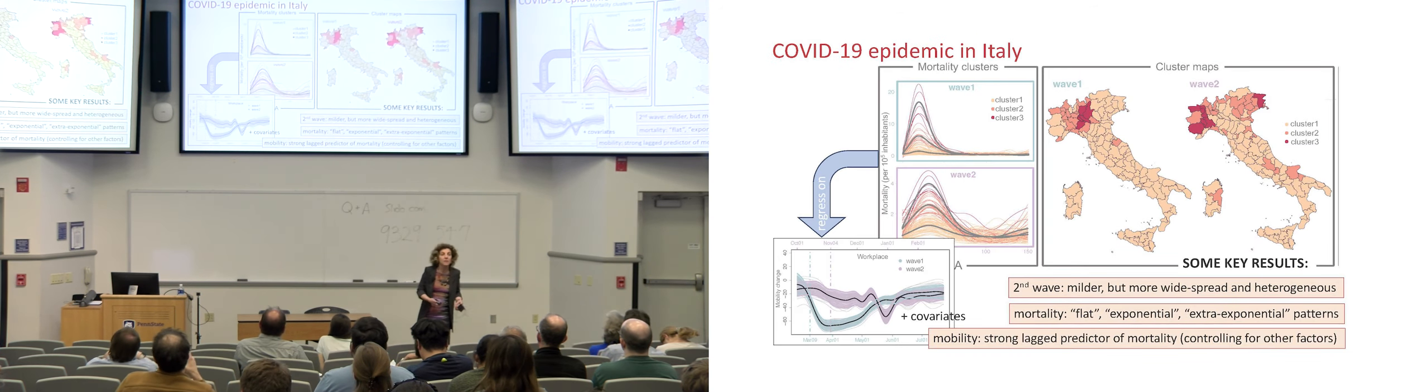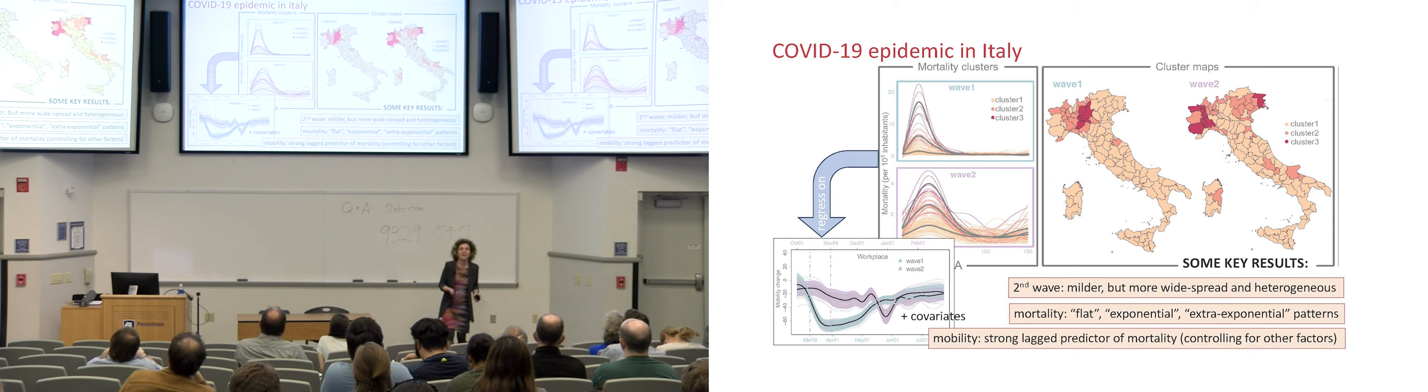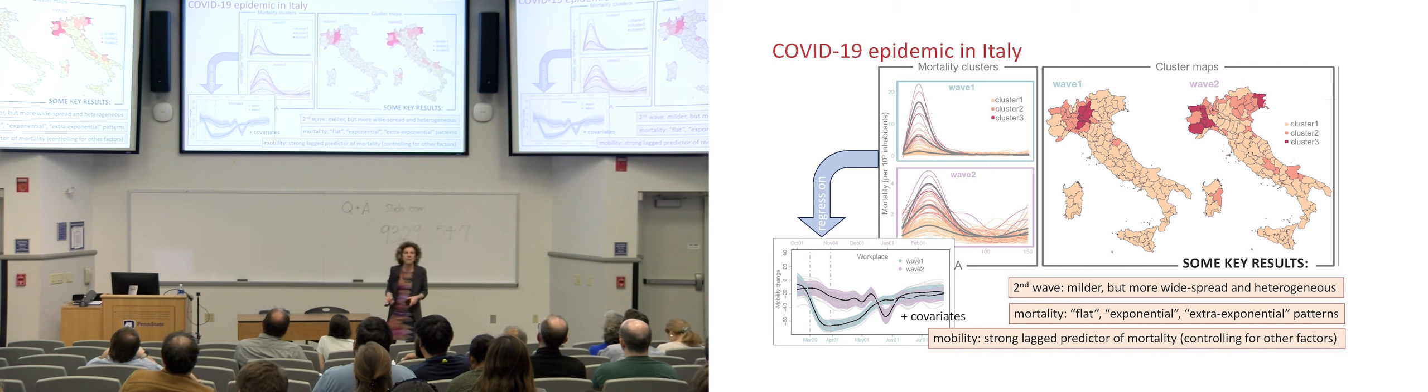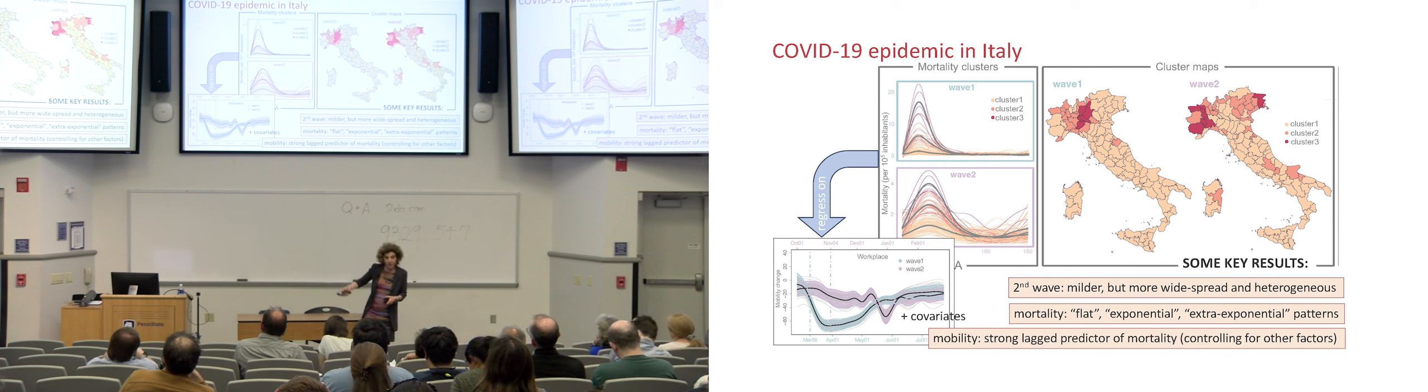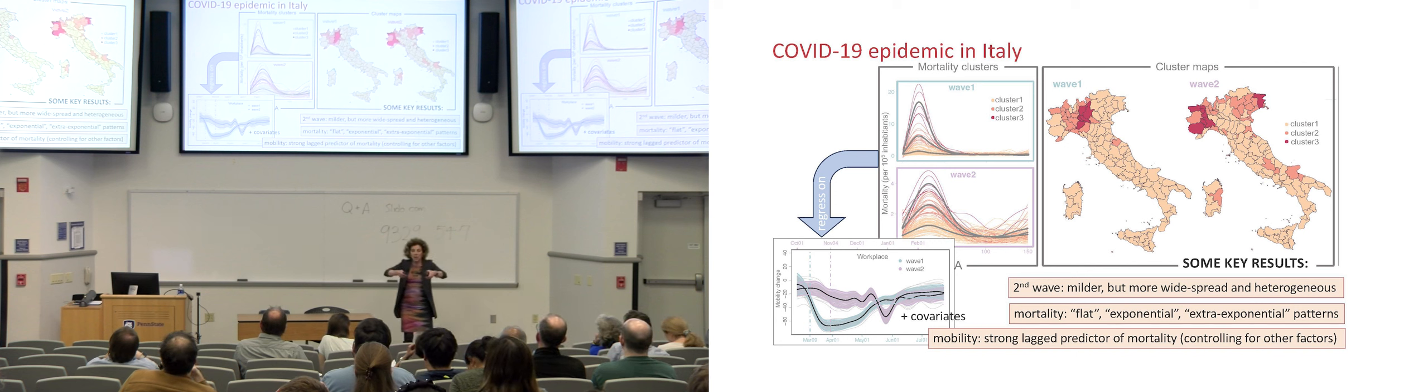So, notwithstanding all of this, in the end, functional data saved the day. And we were able to learn a number of things. Again, I'm listing some key results on the slides. I'm not going to discuss this in great depth. You see here the mortality curves and the mobility curves as we reconstructed them and aligned them for first and second wave. Registration here, alignment was particularly important because different locations in Italy were starting their curve at very different points in time. So, we had to register them properly before we could compare the curves.